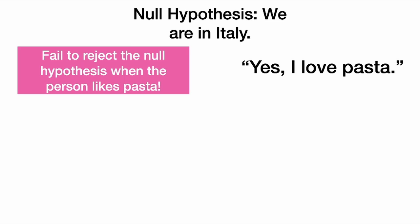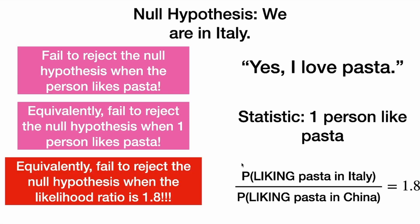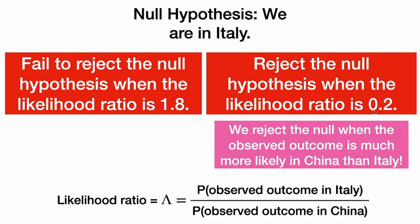If they said yes, I do like pasta, that's going to cause us to fail to reject the null hypothesis and still believe that we're in Italy. Equivalently, we could express this as a statistic: one person in our sample of one liked pasta, causing us to fail to reject the null. We could also compute the likelihood ratio, which when the person liked pasta was 1.8. So we fail to reject the null when the likelihood ratio is 1.8, because the observed outcome is more likely in Italy than in China.